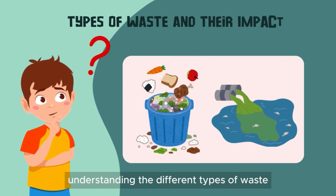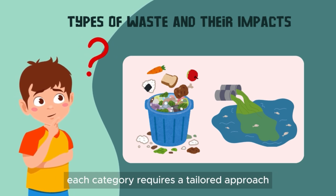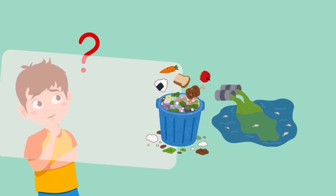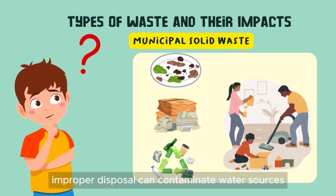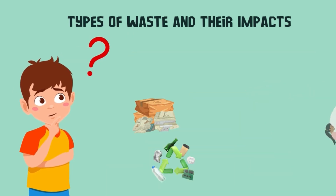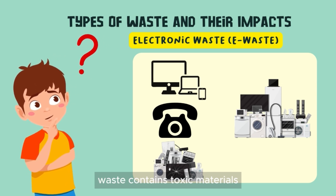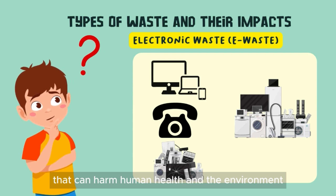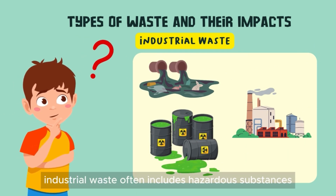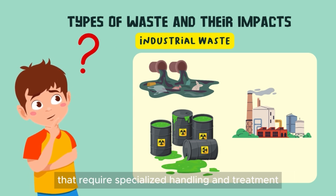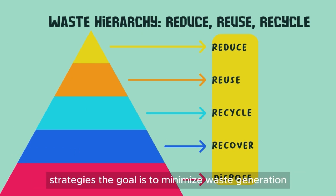Understanding the different types of waste and their impacts is crucial for effective waste management. From household trash to industrial byproducts, each category requires a tailored approach. Household waste includes everyday items like food scraps, packaging, and paper — improper disposal can contaminate water sources and spread disease. E-waste comprises discarded electronics like phones, computers, and appliances, containing toxic materials that can harm human health and the environment. Industrial waste, generated by factories and manufacturing processes, often includes hazardous substances requiring specialized handling and treatment.